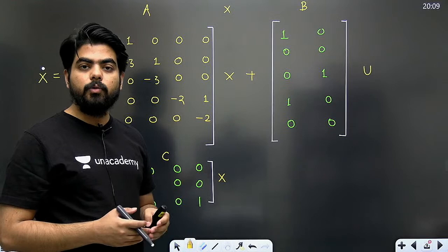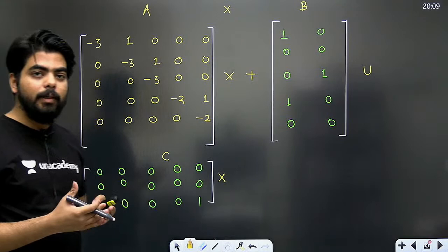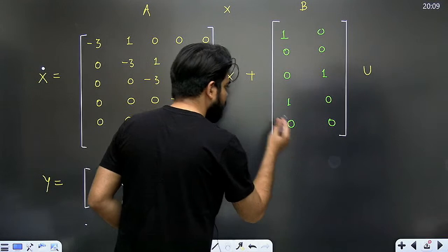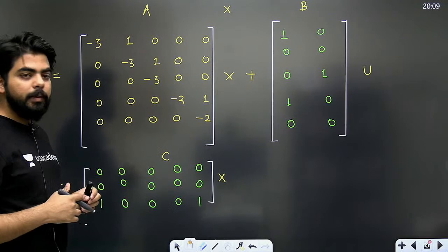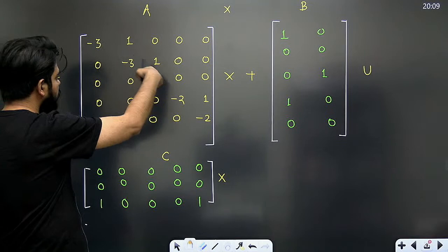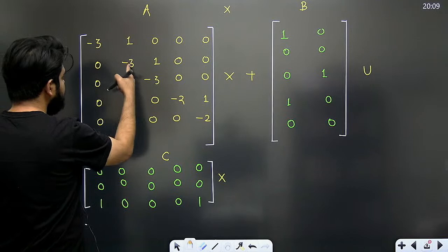Determinant को check करना होता, इसलिए shortcut यह है कि आपको यहाँ Jordan blocks ढूंढने होते हैं। कैसे पता लगता है कि कोई block Jordan block है या नहीं? उसके लिए simple तरीका - आप यहाँ देखोगे कि diagonally -3, -3, -3 repeat हो रहा है। पहला वाला -3 ठीक है, second वाले -3 के ऊपर आपको 1 दिखेगा।